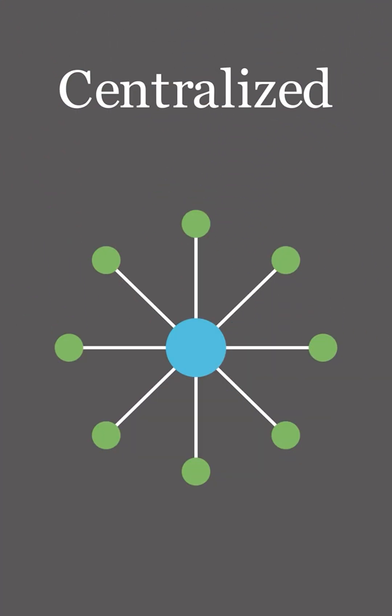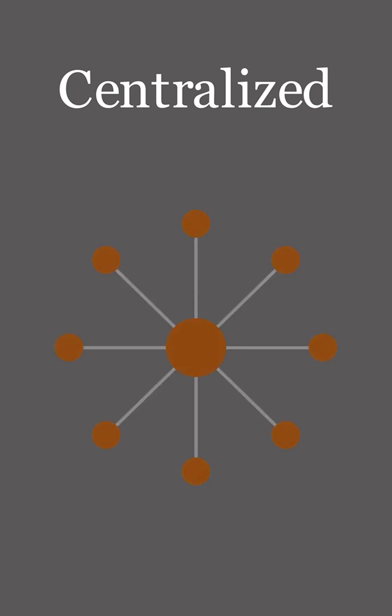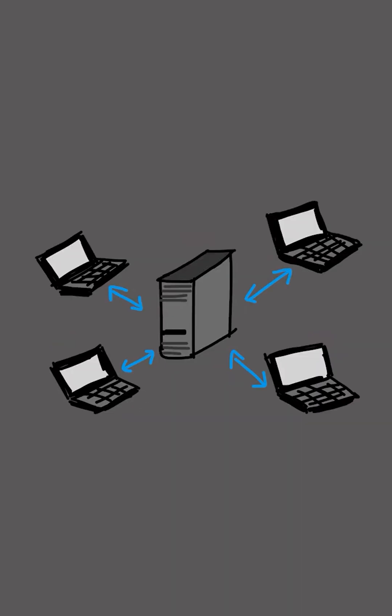In centralized systems, decision-making authority, control, and data storage are concentrated within a single entity, the master node. All the slave nodes are dependent on the master node. If it fails, the whole network fails. One example of this could be the traditional client-server model.